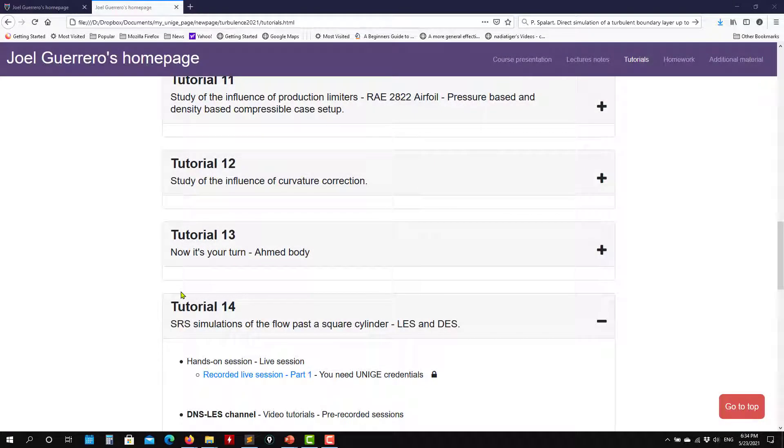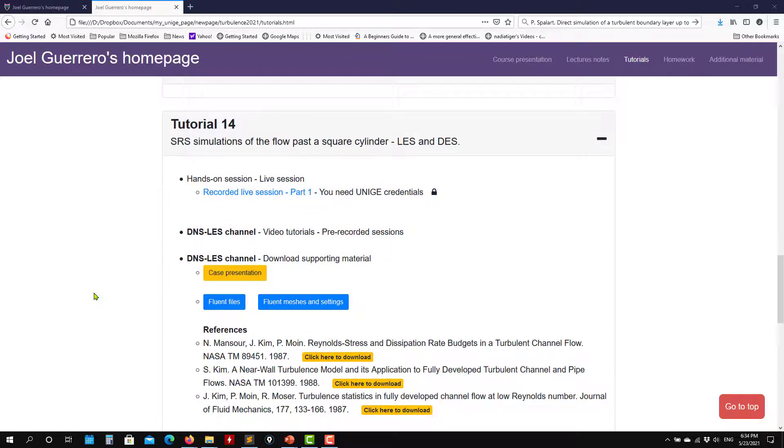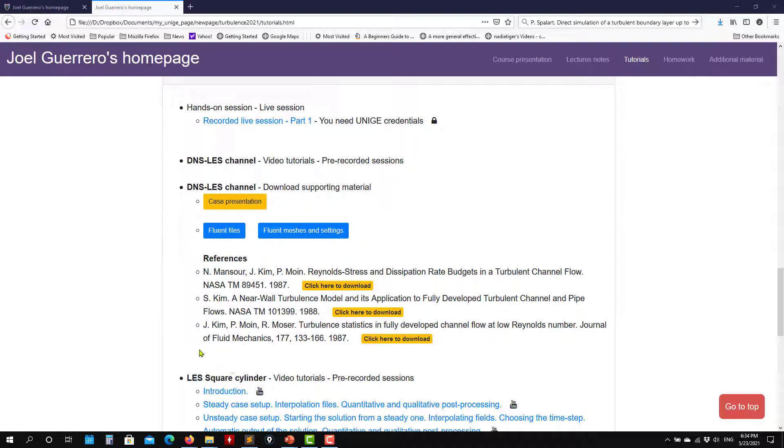Hello there. So let's move to the final tutorial. These are scale resolver simulations. It's the same as previously. These are about resolving the scales of space and time, requiring fine meshes but also moving to an unsteady domain. So they are very time consuming. We have two cases now - the LES square cylinder and the DNS LES channel.